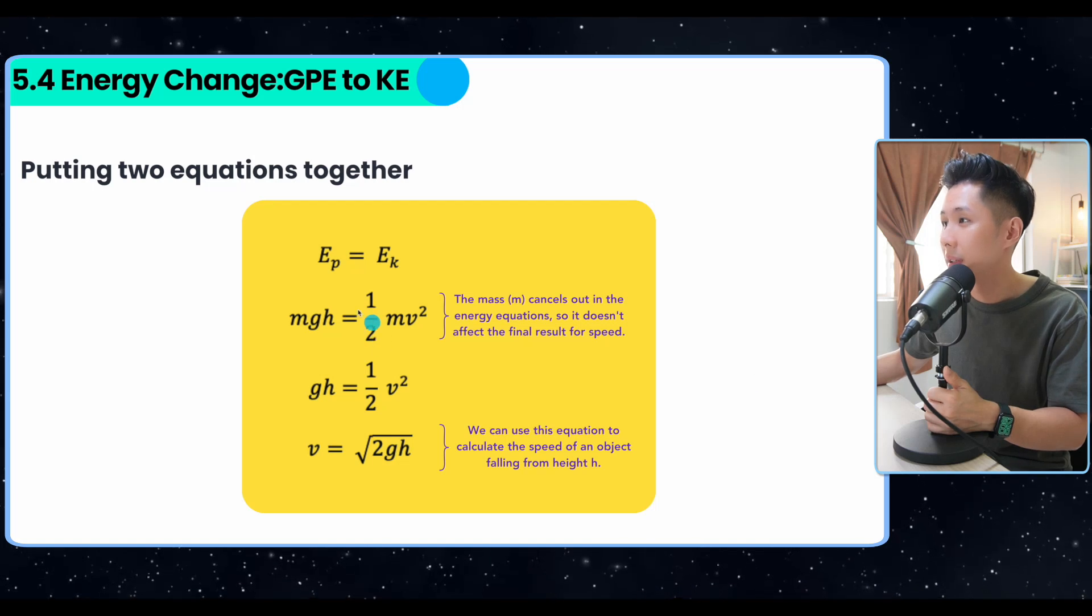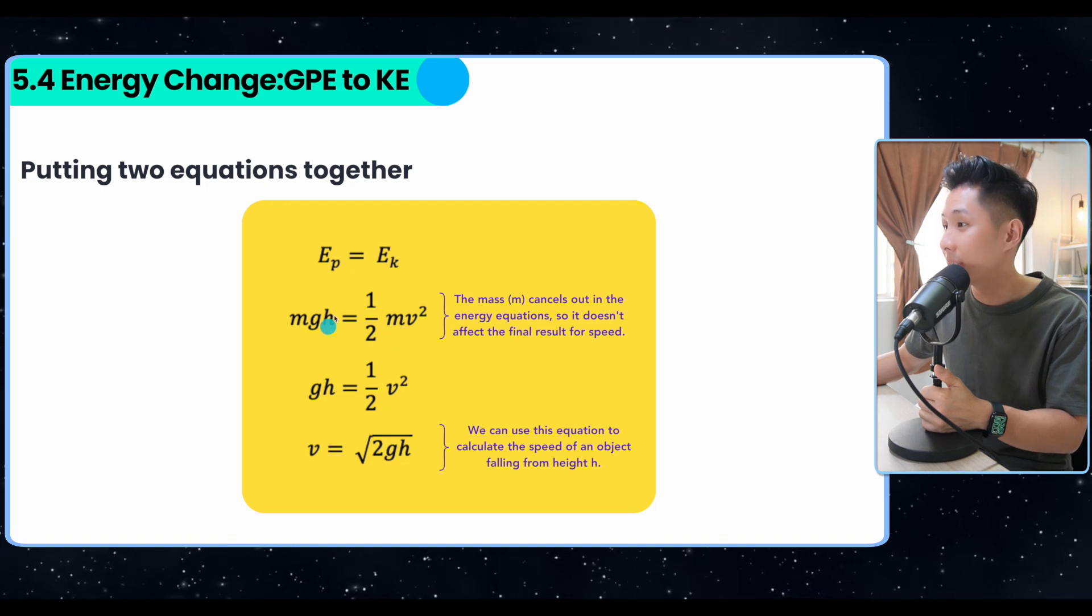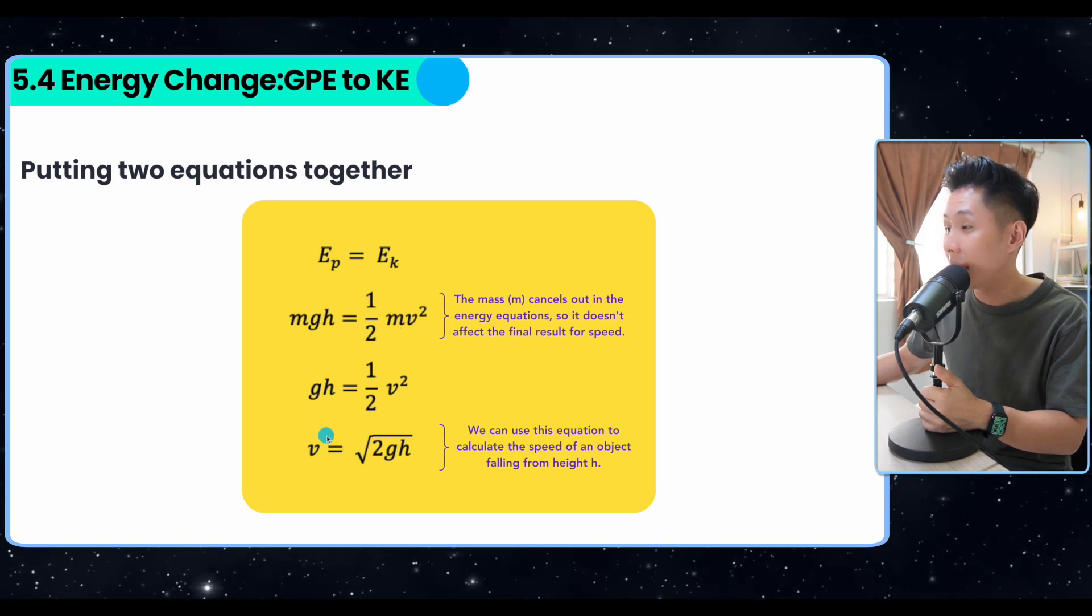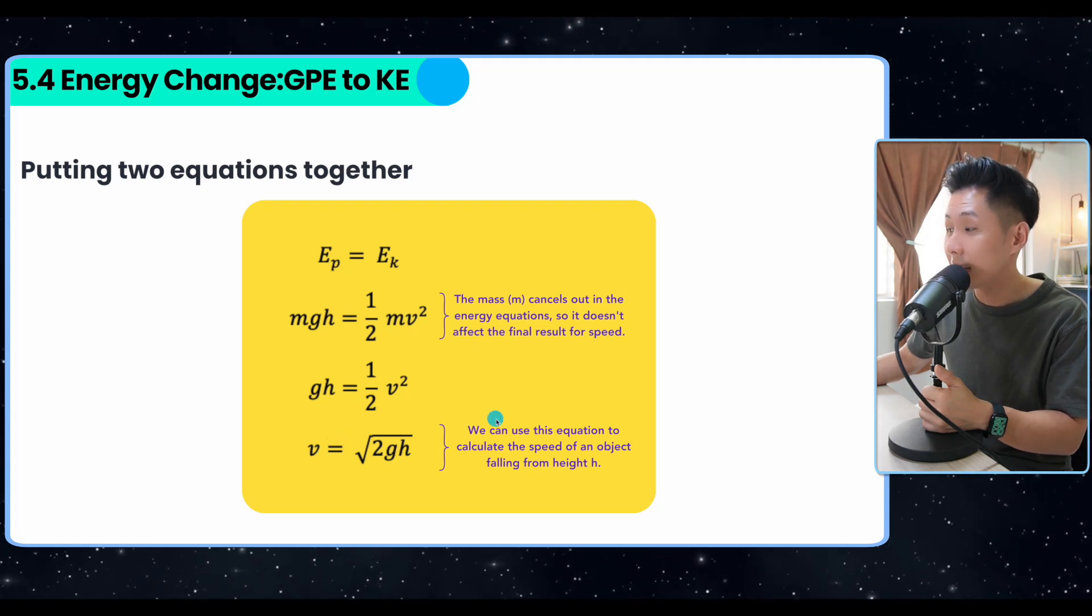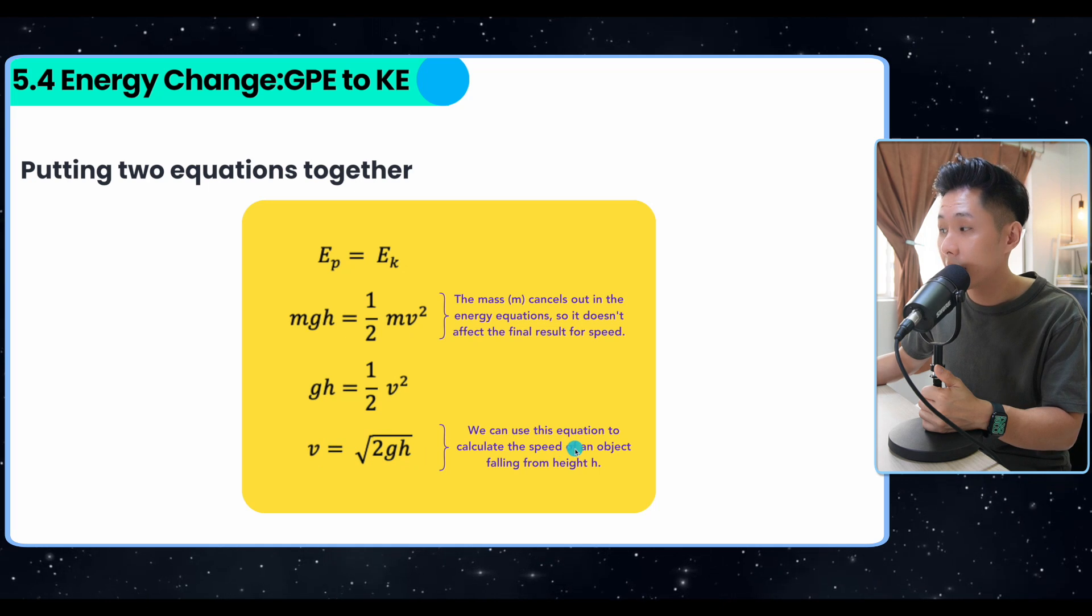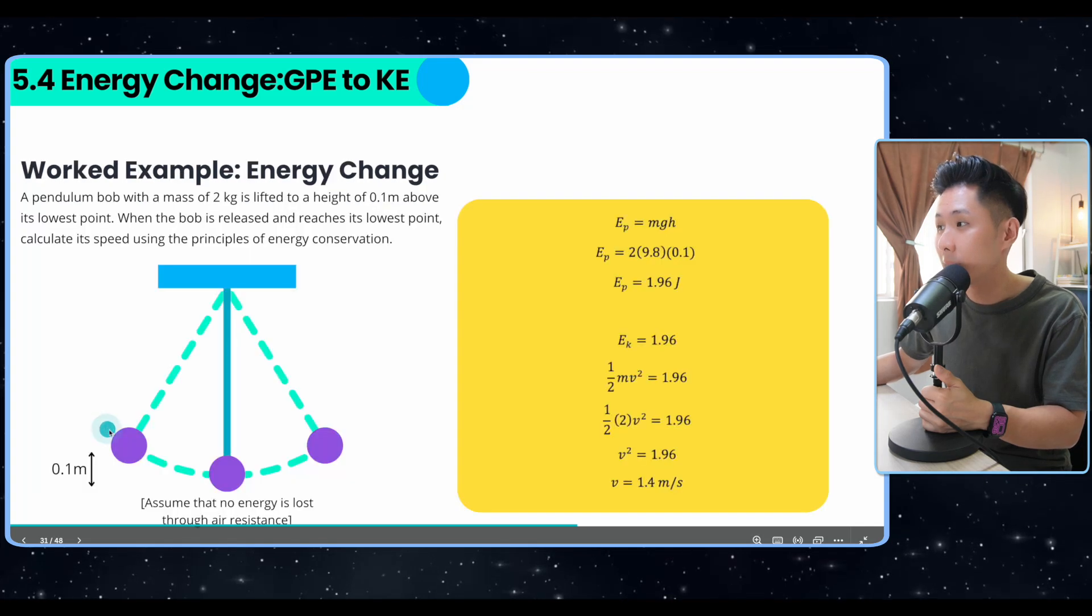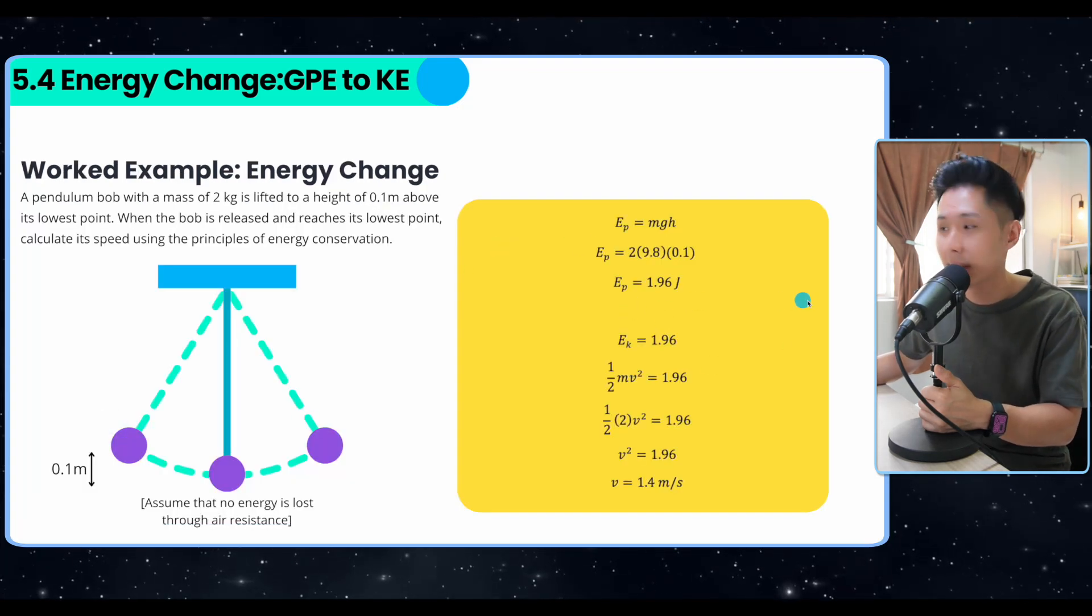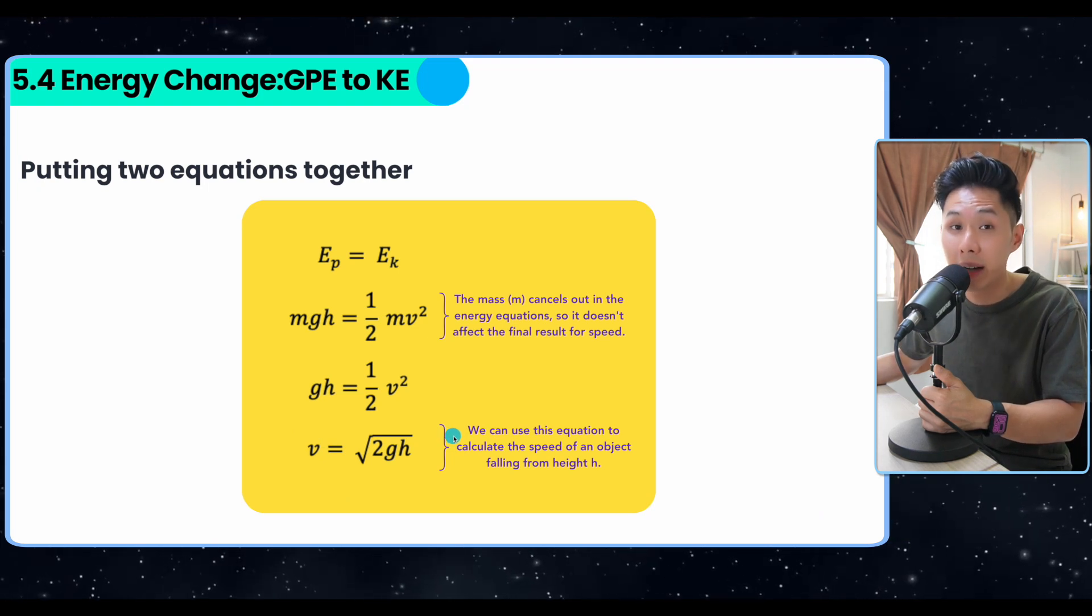Now if we were to put two equations together, MGH equal to half mv square, we can cancel the m out. And then we will find out that v is equal to square root of 2gh. And this equation can be used to calculate the speed of an object falling from height h. So in other words, we don't actually need to go through all these steps. We can just use the same formula and we should be able to find the correct answer here.